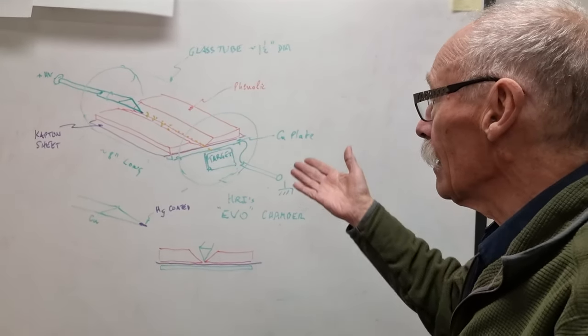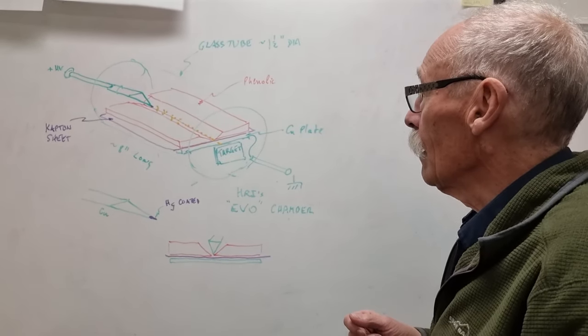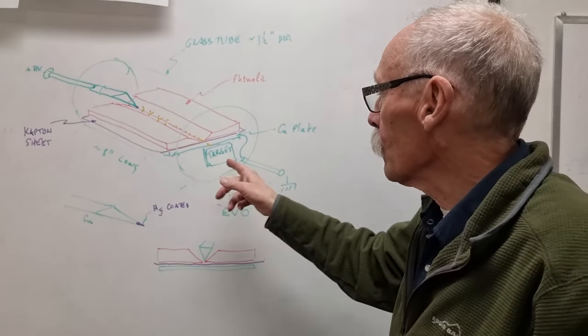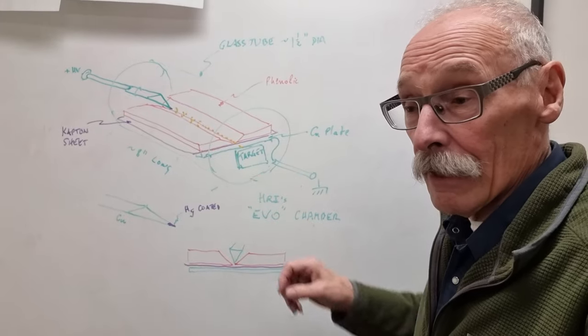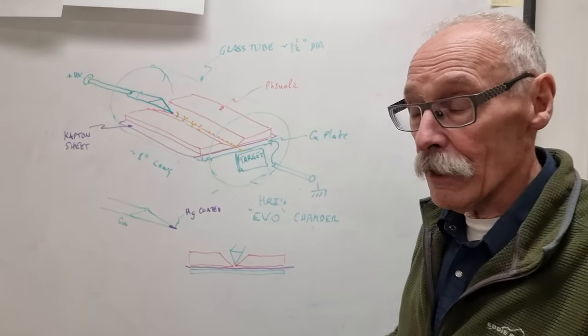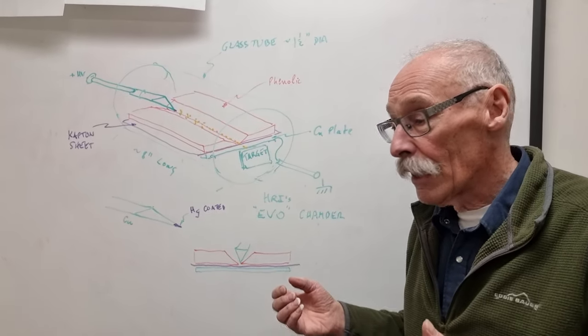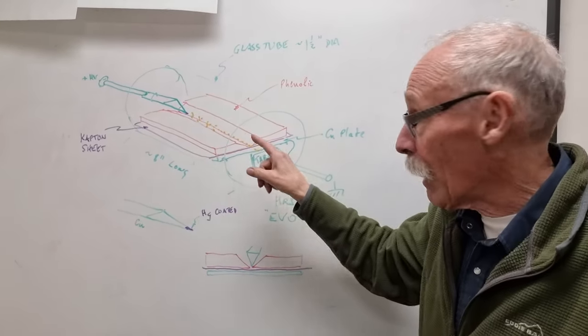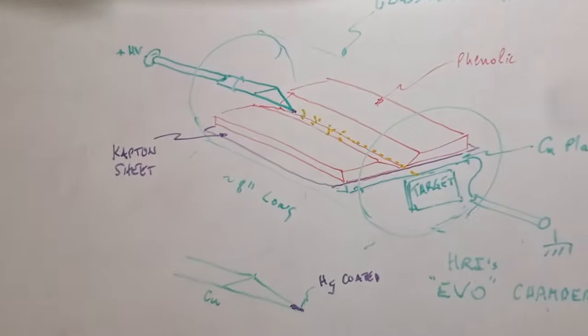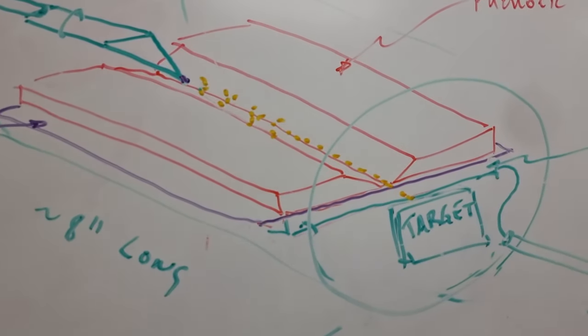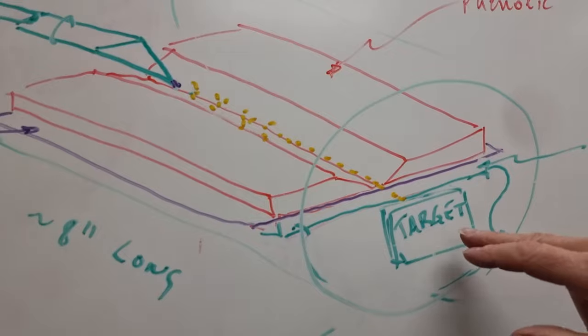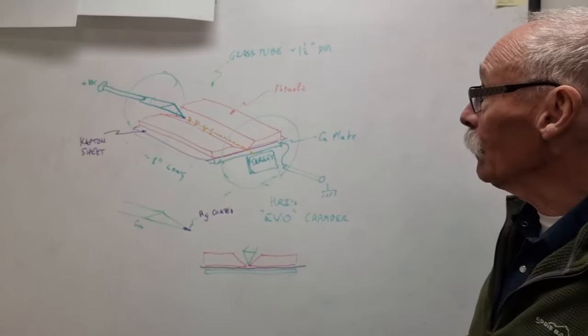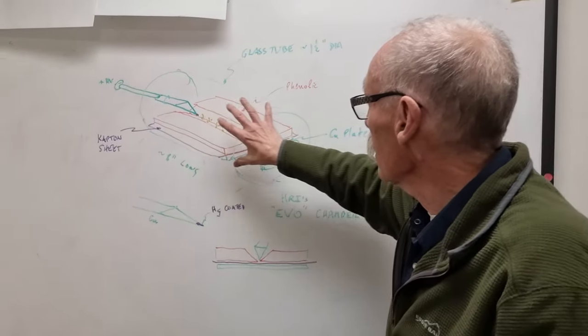In this case, I devised a system where we could quickly test the effect of EVOs on various targets. The claim was that the energy that was deposited on a target from these little EVOs—there's a little yellow track of EVOs—was greater than the energy put into the system.